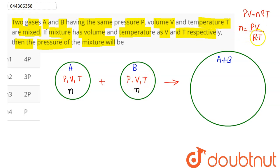Since pressure, volume, and temperature is same, we can say here this mixture has volume as V, temperature as T, and moles here... total moles of the mixture will be equal to moles of A plus moles of B, which is here 2n.